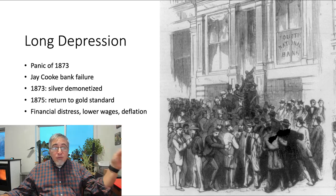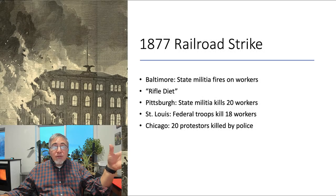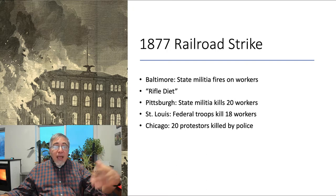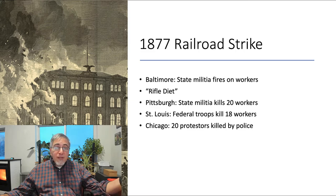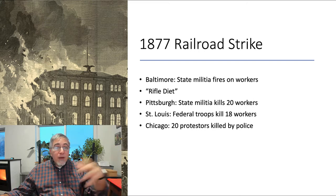Lower wages and deflation led to labor disputes like the Great Railroad Strike of 1877. Rail lines slashed wages, although the workers complained, they continued to reap enormous government subsidies and to pay shareholders lucrative stock dividends. Workers struck from Baltimore to St. Louis, shutting down railroad traffic, which was the nation's economic lifeline, across much of the country.